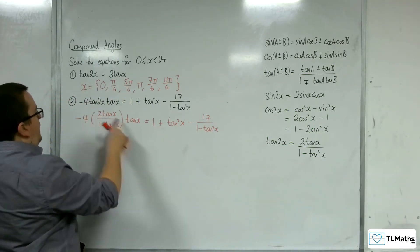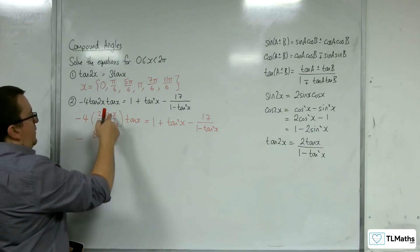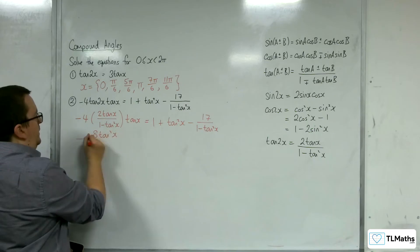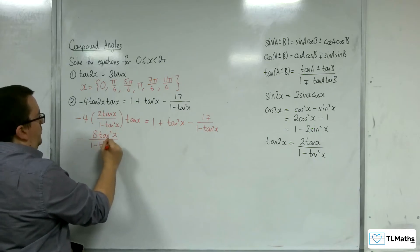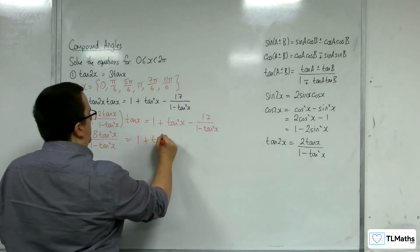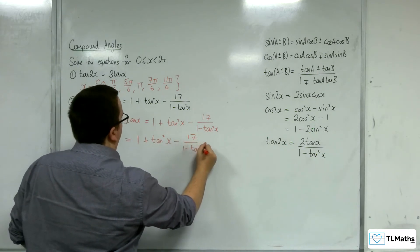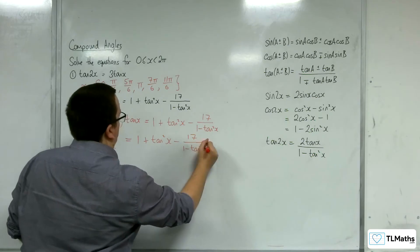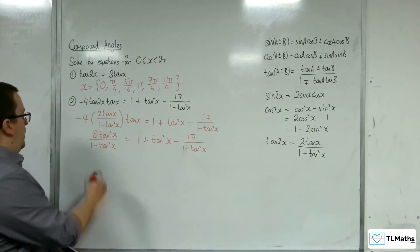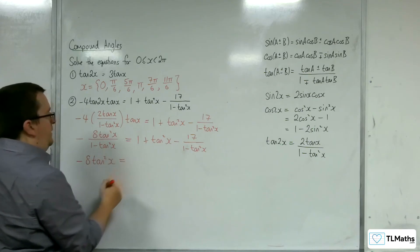Let's simplify this a bit. We've got minus 4 times 2, so that's negative 8. We've got tan x times tan x, so tan squared x over 1 minus tan squared x, equals 1 plus tan squared x, take away 17 over 1 minus tan squared. Now let's multiply by the 1 minus tan squared — we've got minus 8 tan squared left on the left-hand side.